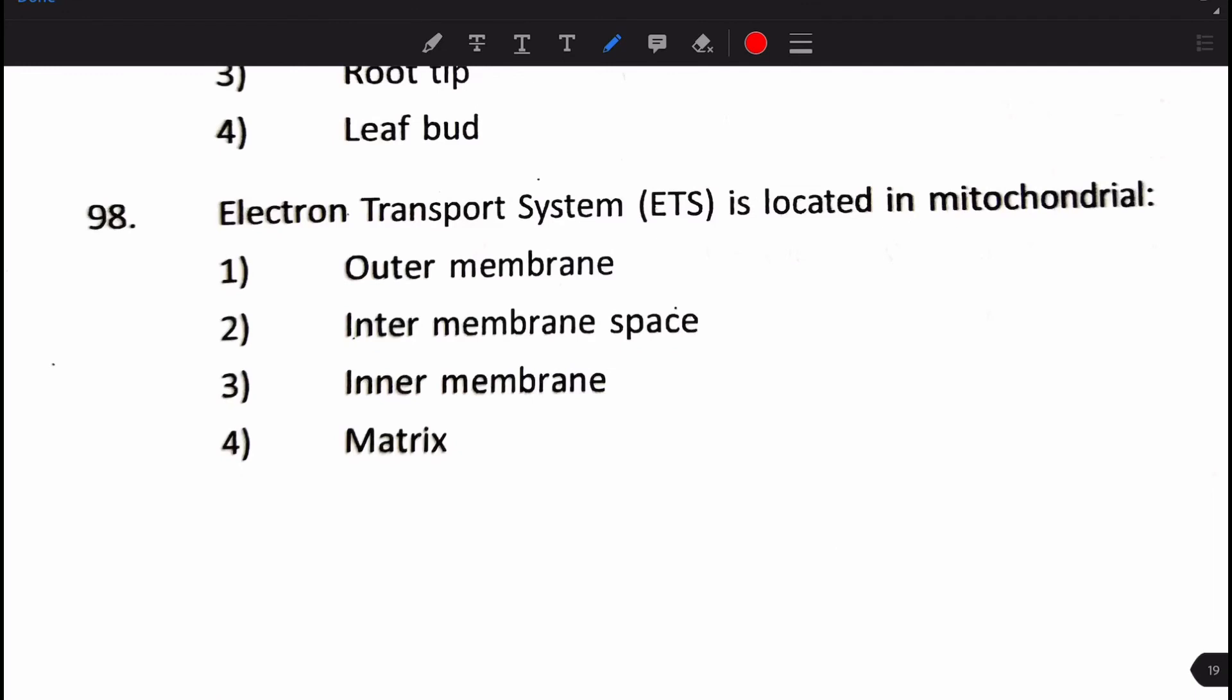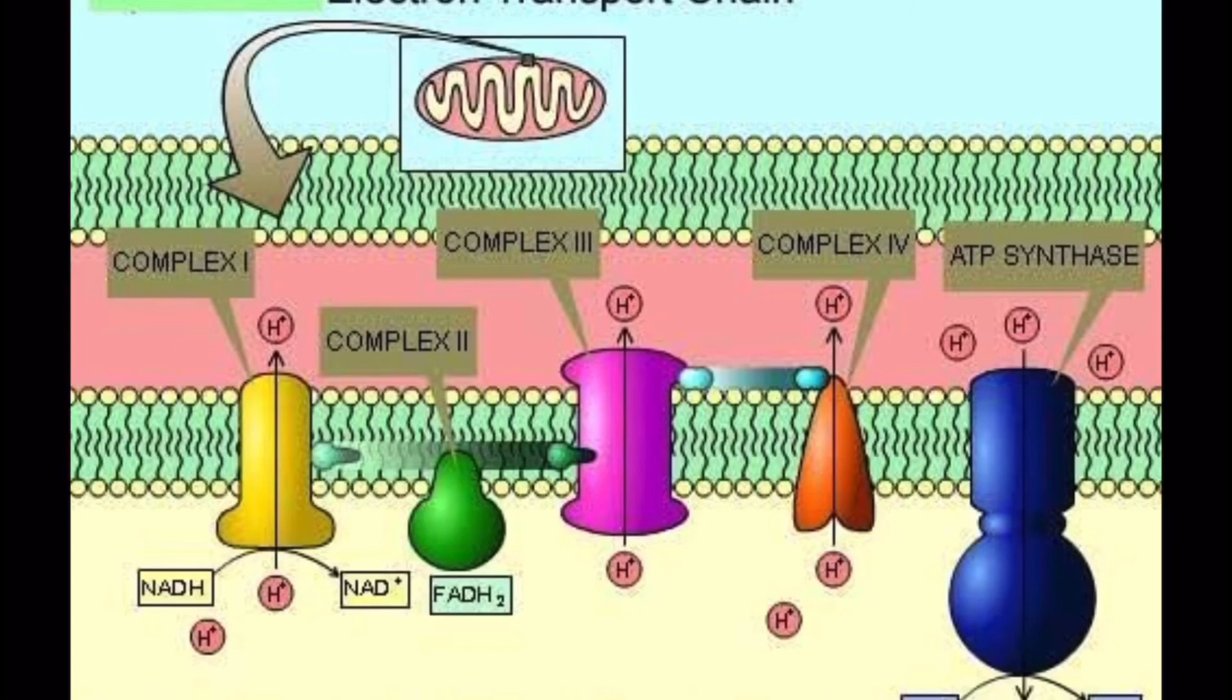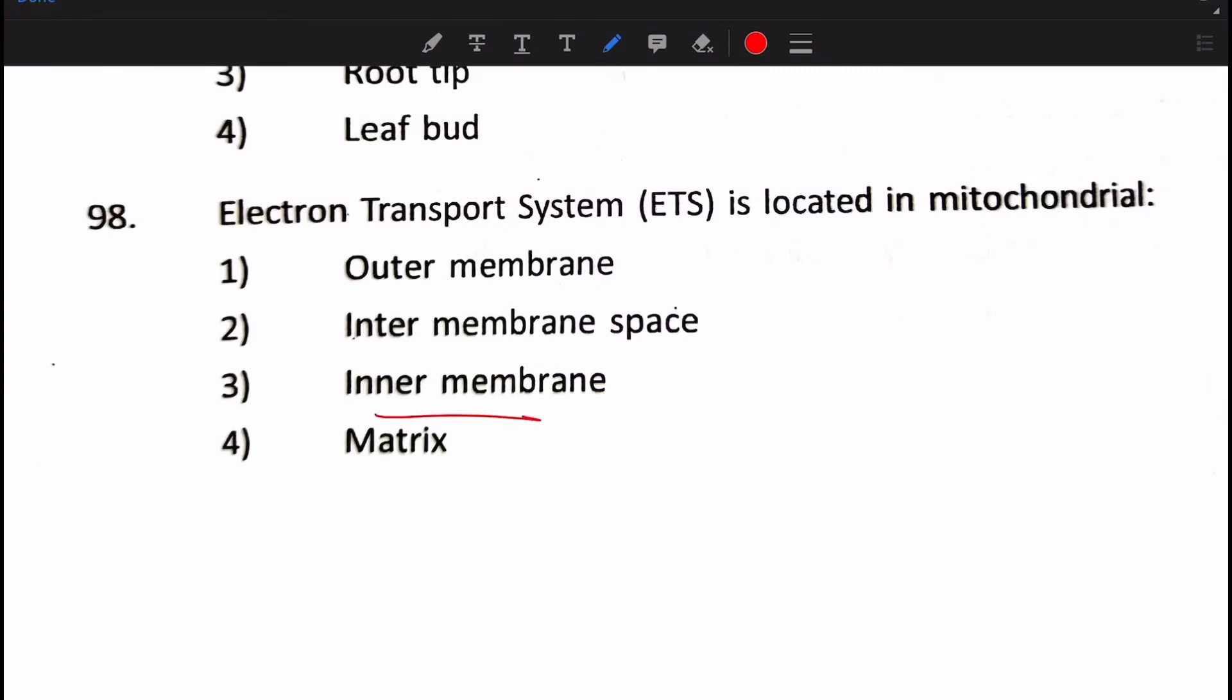Next question is, electron transport system is located in the mitochondrial and they have given the options for locations. Is it outer membrane, intermembrane space, inner membrane, or matrix? It's tricky. Let's just take an image over here and check it out. We first think that of course, we know that in the inner membrane space, H plus and all, they are getting released. But, that's not where the ETS is located. The ETS is located in the membrane.